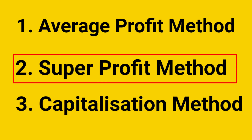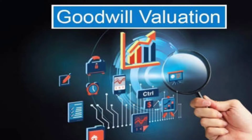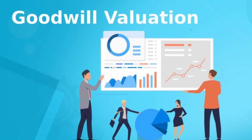Super Profit is the excess of estimated future profit over normal profit. It is a way of determining the extra profits earned by the business. Goodwill is determined by multiplying the value of Super Profits by the number of years of purchase.